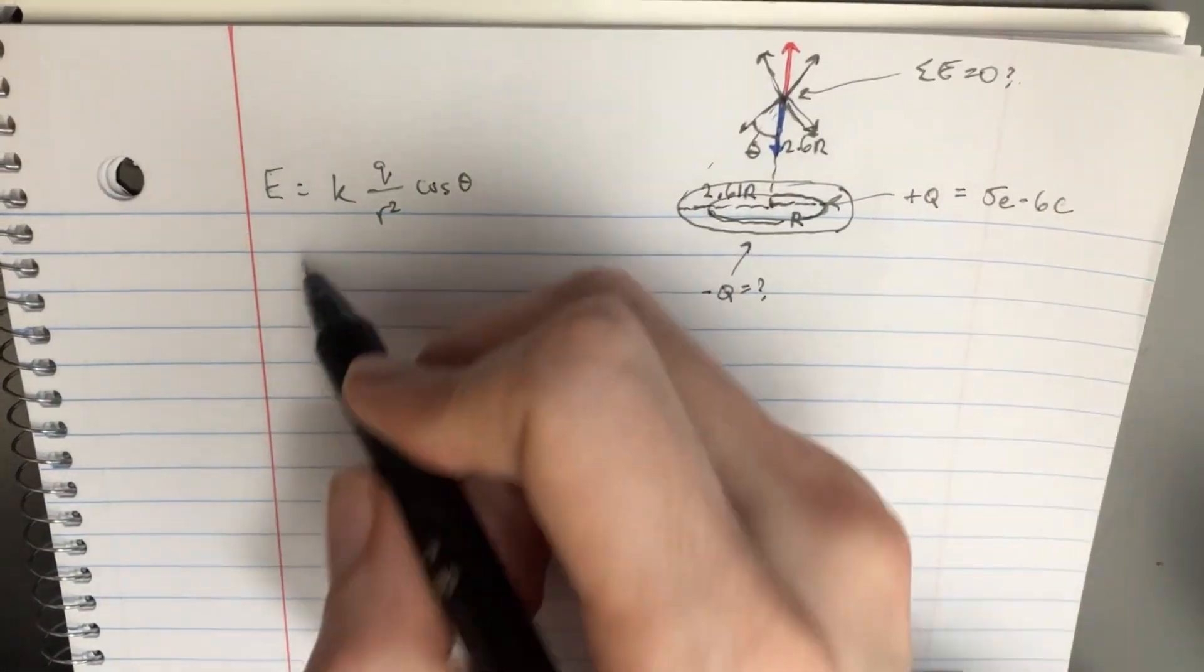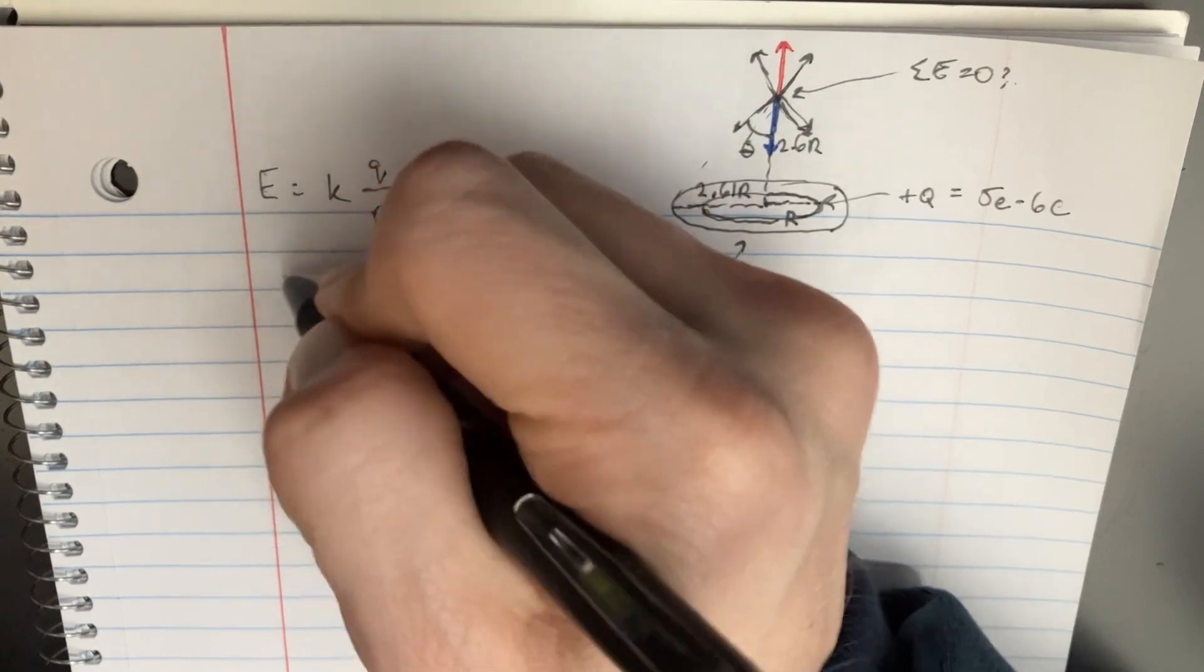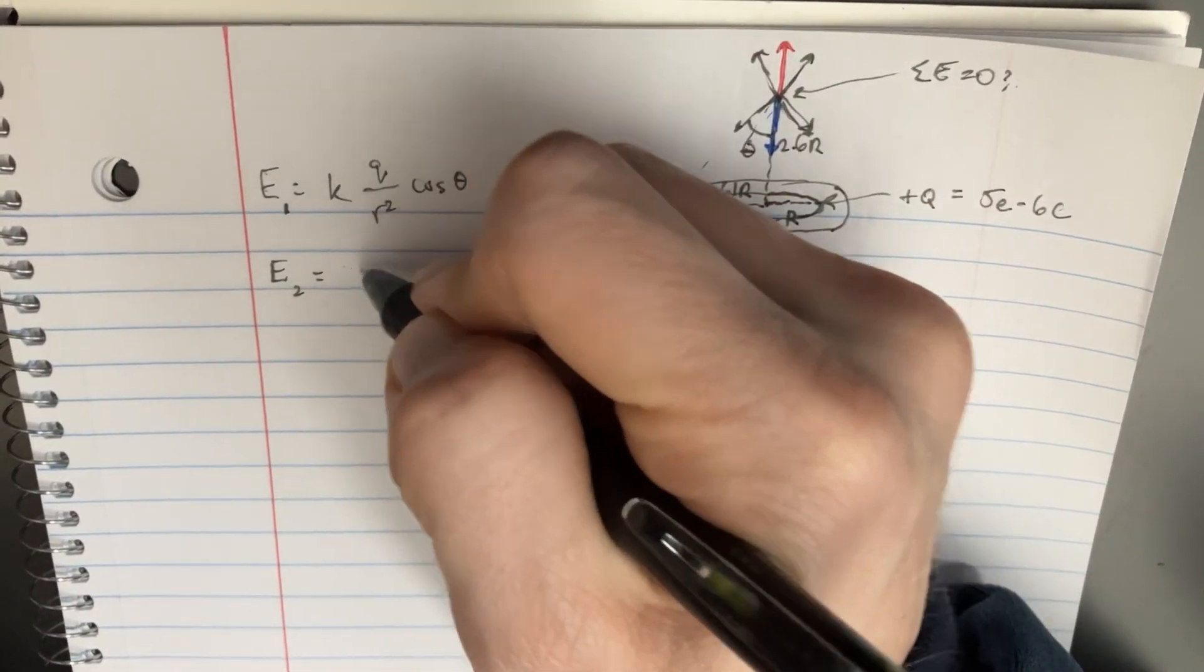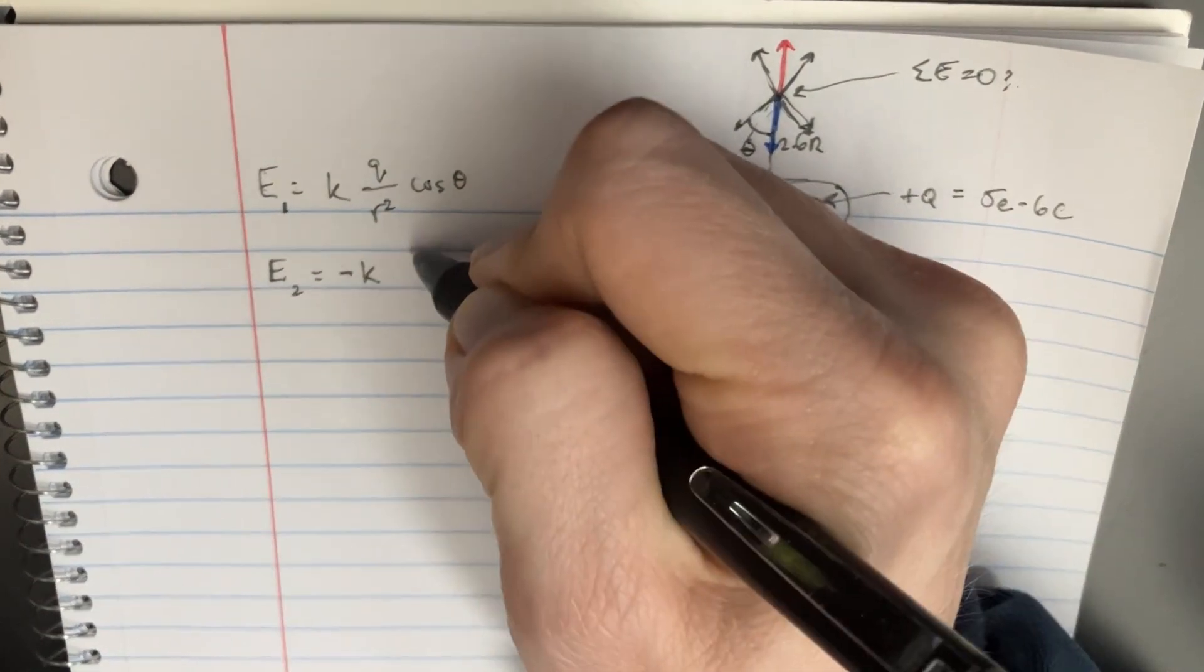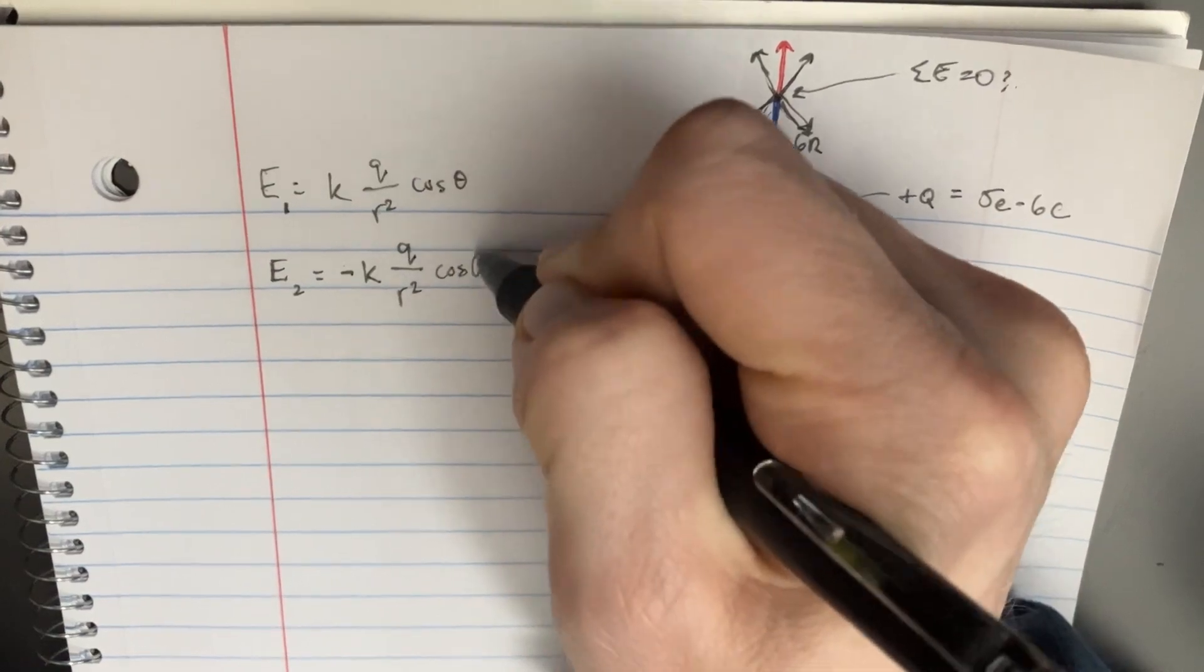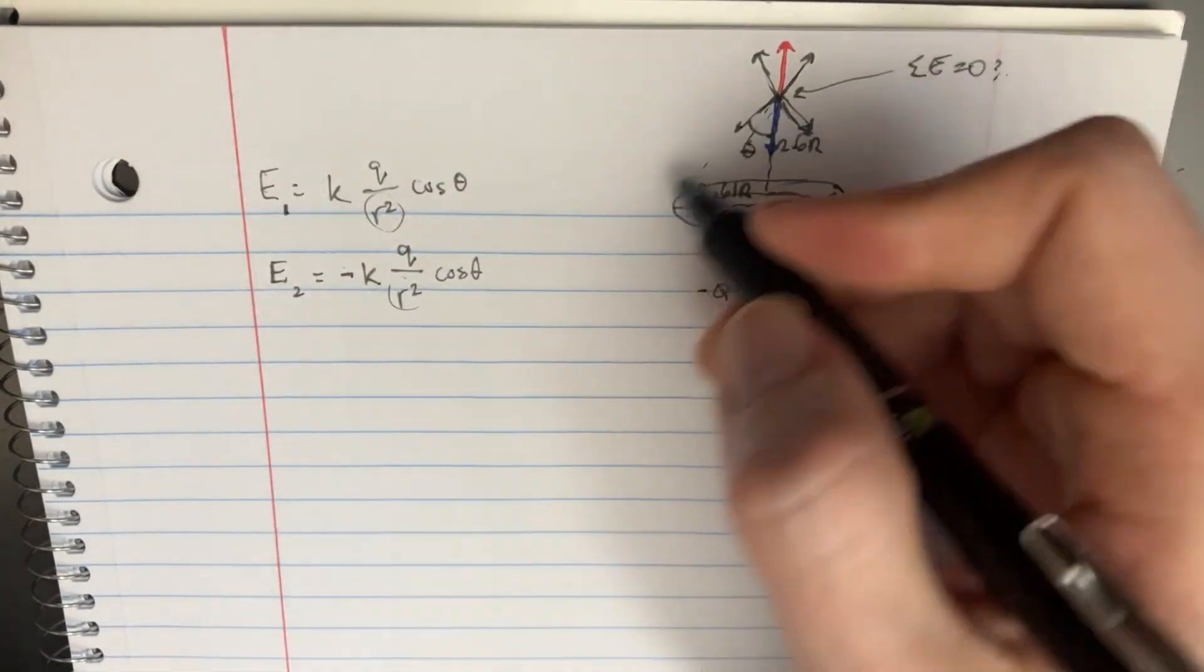And so now we can start thinking about the positive side and the negative side. So this would be maybe E1 and then E2. So we could think that this would be negative k q over r squared, cosine theta. And now let's start plugging in our r squareds for these things, because on the one side, we have r squared being...